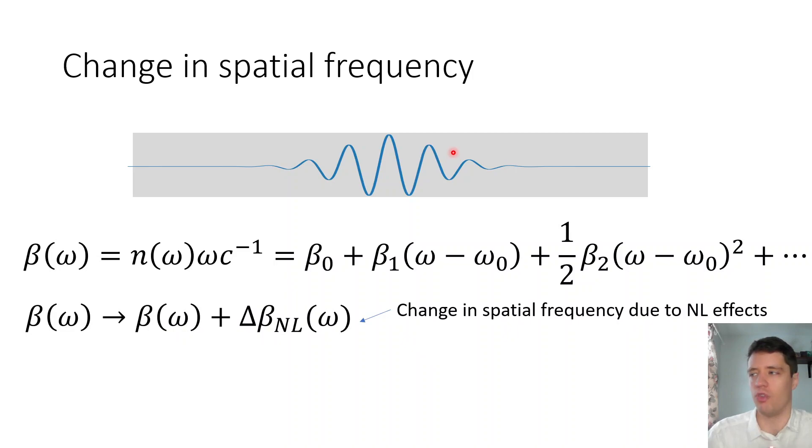Now another important contribution to the spatial frequency is potential non-linear contributions. Essentially if the intensity of this pulse is very high, it's going to alter the refractive index and potentially change the way that the pulse propagates. It turns out that we can write this contribution to the spatial frequency also as a Taylor expansion in the following way.